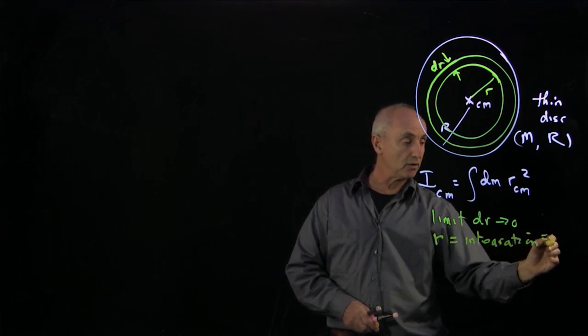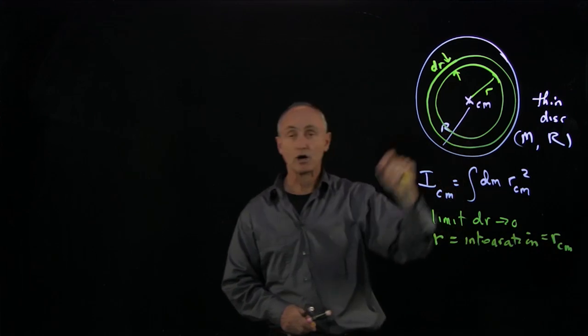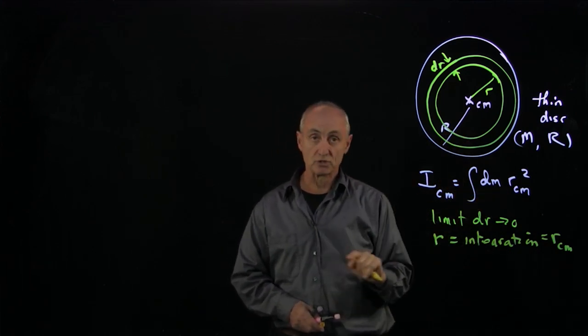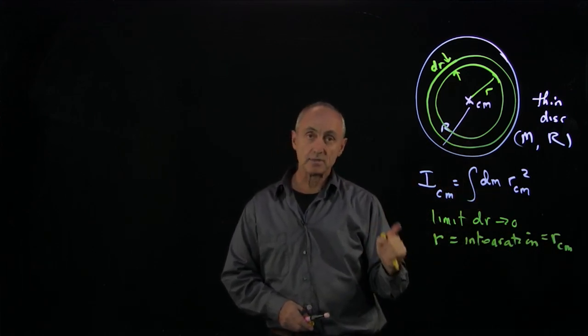So r will be our integration variable, and that will be equal to rcm, what we're calling rcm in our abstract result. Now the dm is the tricky part.